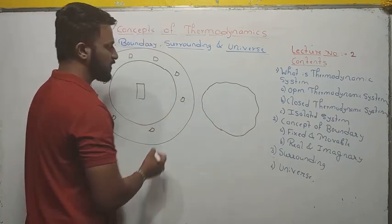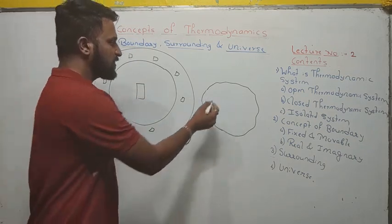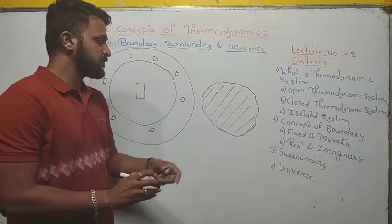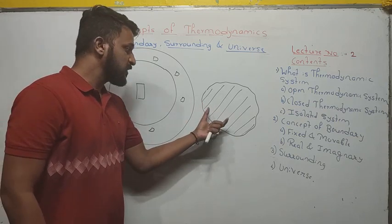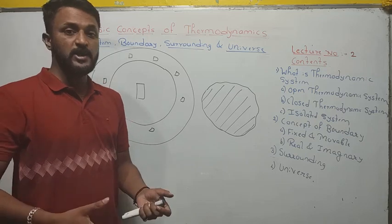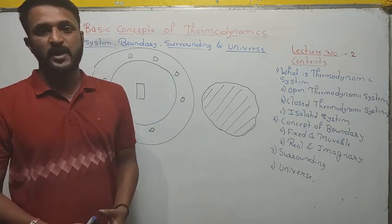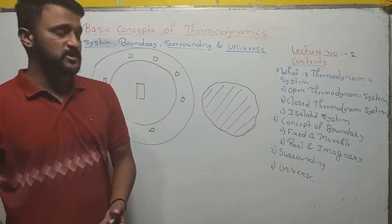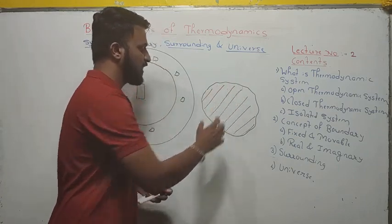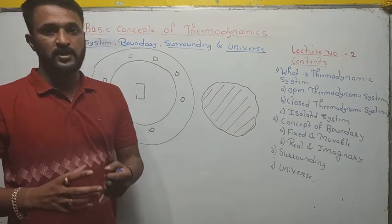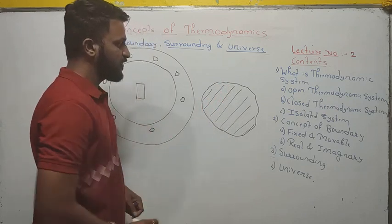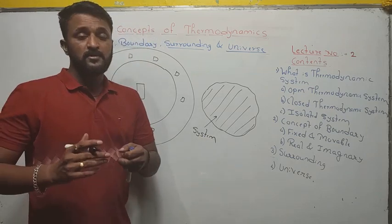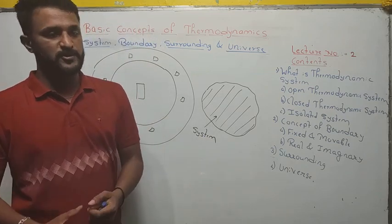Now consider any enclosed shape — this is a region in space where something is actually happening, or you can say this is a region in space which contains matter. This is a place where some thermodynamic process is carried out. A thermodynamic process means the conversion of one form of energy into another form, something like what happens in a heat engine. This is the area where our attention is focused for study. Such a region is called a system. Remember: a system is defined as a region in space which contains matter where some thermodynamic processes are carried out.